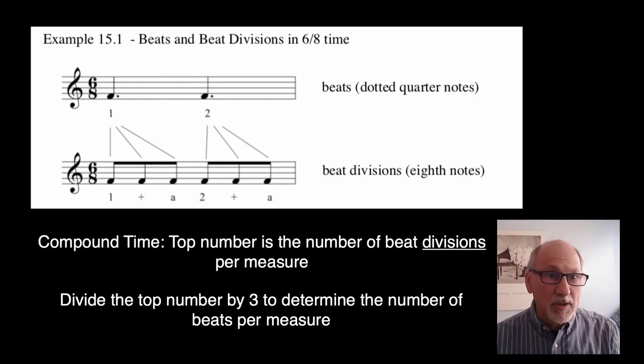This is pretty clear in this example. The 6-8 time signature accurately tells us that there are 6 eighth notes per measure. But these eighth notes are beat divisions, not beats. Dividing 6 by 3 gives us 2, and thus there are 2 beats per measure in 6-8 time.